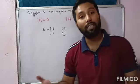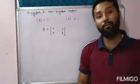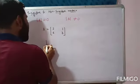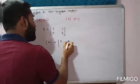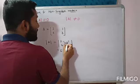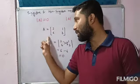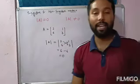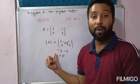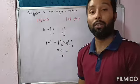The determinant of A equals 2×3 - 6×1 = 6 - 6 = 0. Since the determinant of A equals zero, we can say this matrix is a singular matrix. If the determinant were not zero, the matrix would be called non-singular.